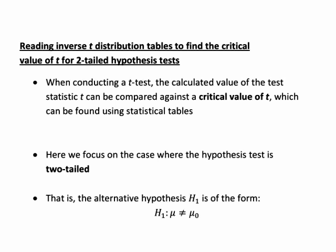Here we're focusing on the case where the hypothesis test is two-tailed. That is, the alternative hypothesis H1 has the form mu not equal to some specified number. Let's see how we can use the tables to find this type of T value.